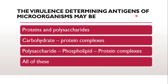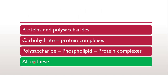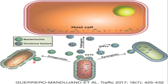Next question: the virulence determining antigens of the microorganism may be — proteins and polysaccharides, carbohydrates, protein complexes, polysaccharide-phospholipid-protein complexes, or all of these? Virulence factors are molecules produced by bacteria, viruses, fungi, protozoa, etc., responsible for attachment to the host cell and immune invasion. The correct answer is all of these — any one of these can be the virulence determining antigen of the microorganism.